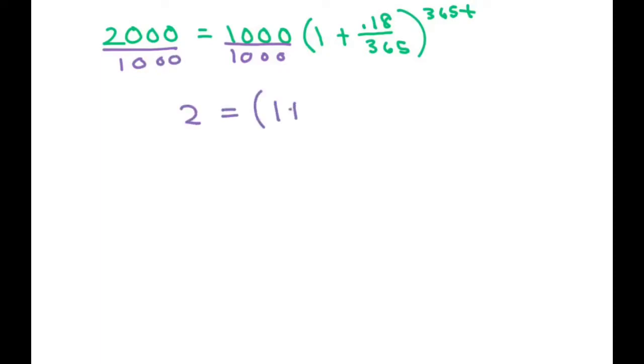2 equals 1 plus 0.18 over 365 to the 365t power. Now, when you're doing this, you don't want to simplify until the very end because of rounding errors. So what we're going to do is go ahead and take a log of both sides.